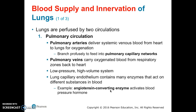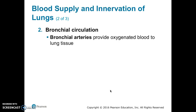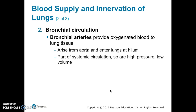The lung capillary endothelium contains many enzymes that act on different substances in the blood — for example, angiotensin-converting enzyme (ACE), which activates a blood pressure hormone. The second circulation is called bronchial circulation. Bronchial arteries provide oxygenated blood to the lung tissue, arising from the aorta and entering the lungs at the hilum. Bronchial arteries are part of the systemic circulation, so they are high-pressure, low-volume.